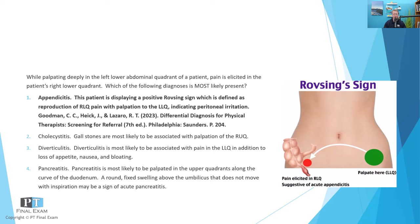It's a little bit like the crossed straight leg raise sign when we talk about disc pathology in the lumbar spine — where lifting one leg reproduces pain on the other side, indicating neural issues, specifically impingement associated with disc herniation. Rovsing's sign is a similar concept: palpating in the left lower quadrant elicits pain in the right lower quadrant because of the inflamed peritoneal lining. Your peritoneal cavity is affected due to the appendicitis.